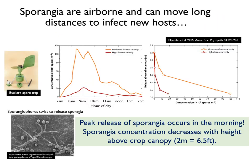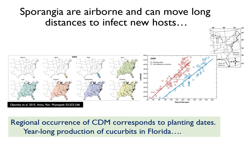We know that sporangia are released in the morning, shortly after sunrise. This coincides with the warming of the air that lowers relative humidity and causes the sporangiophores to twist to release the sporangia into the air. The occurrence and spread of downy mildew corresponds with the planting of cucurbits along the east coast. Further north, the fungus is unable to overwinter in the absence of a living host. However, cucurbits are produced year-long in Florida, so a constant supply of inoculum exists.